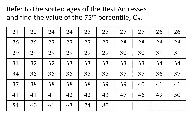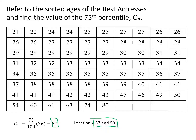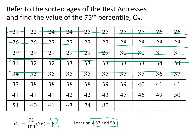Next, we want to find Q3, the third quartile, which is the 75th percentile. We calculate 75 over 100 multiplied by 76. This time we get a whole number: 57. When we get a whole number, we don't simply round up. Instead, we average both locations 57 and 58. Counting to those two locations in our data, location 57 and location 58 are both 39, and averaging them gives us Q3 equals 39.5.